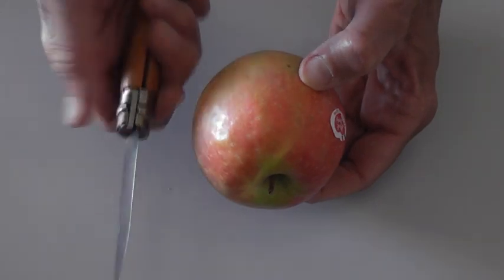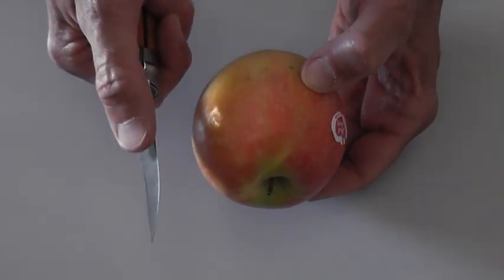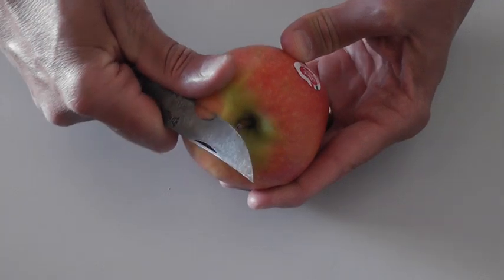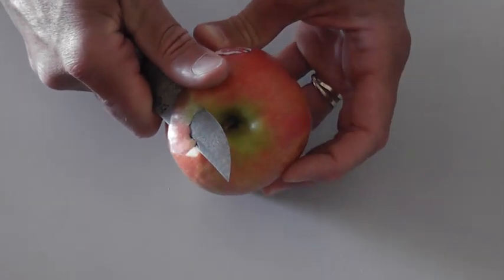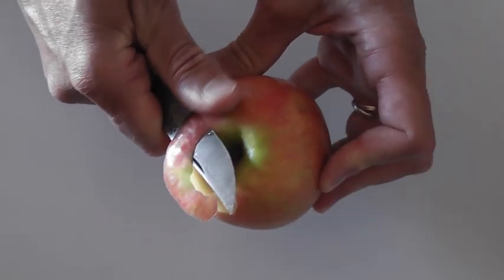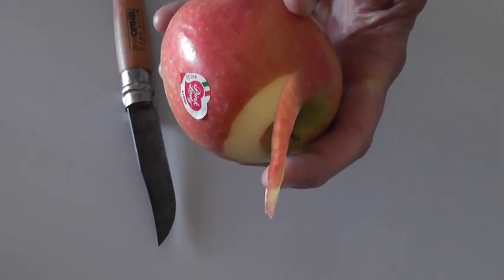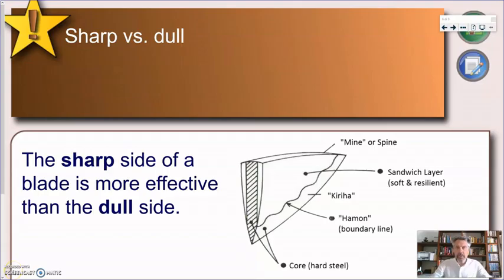But if I try, on the other hand, the sharp side, and be careful with your fingers, with very little effort, I'm able to peel my apple, as you can see. So, as we saw in this demonstration, if I want to peel an apple, using the sharp edge of a knife is way more effective than using the flat side or dull side. And, again, we have to think, why is this?